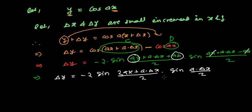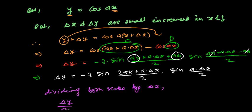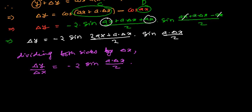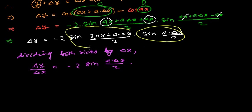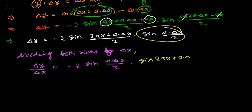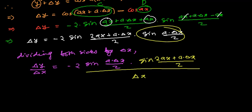As we used to do in previous videos, we divide both sides by delta x and then take the limit as delta x tends to 0. So first let's divide both sides by delta x. We get delta y over delta x equals to minus 2 sine((a·delta x)/2) divided by delta x, times sine of (2ax + a·delta x)/2. We use the limit formula: as angle tends to 0, sin(angle)/angle equals 1.